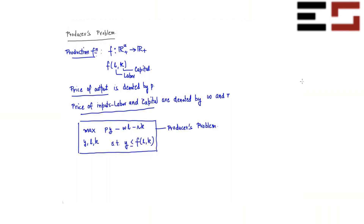This is the definition of the producer's problem, where the producer is a competitive firm — competitive because they are a price taker in both the input and output markets.